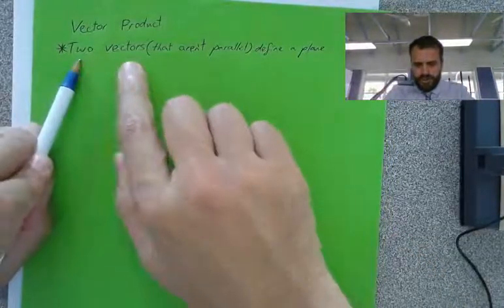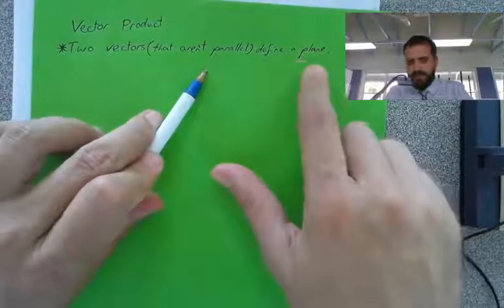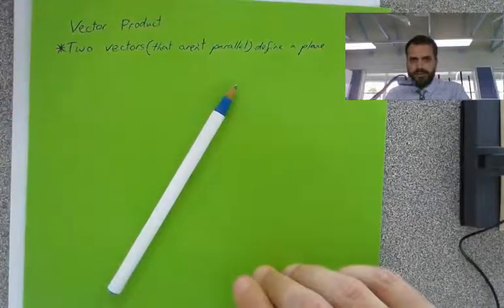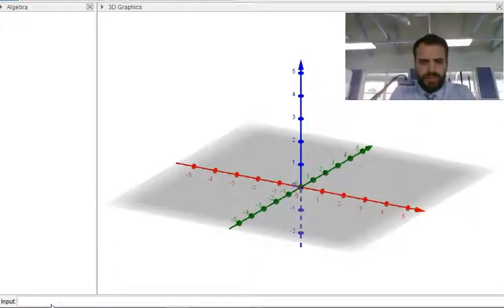First bit, two vectors that aren't parallel define a plane. Now, what do I mean by that? Let's take a look, I'm going to use GeoGebra. So I'm going to create two vectors, remember two vectors define a plane.